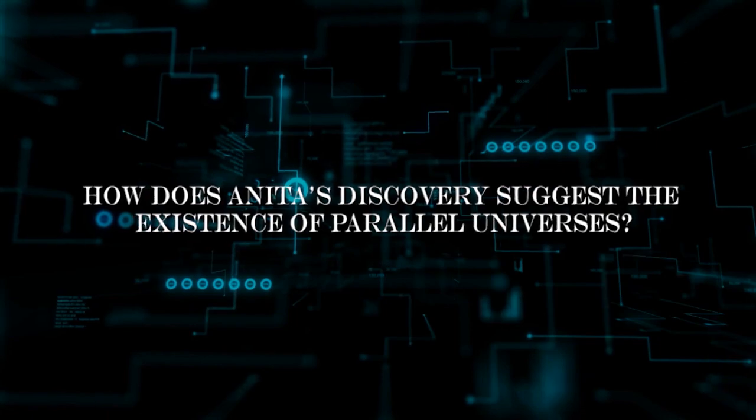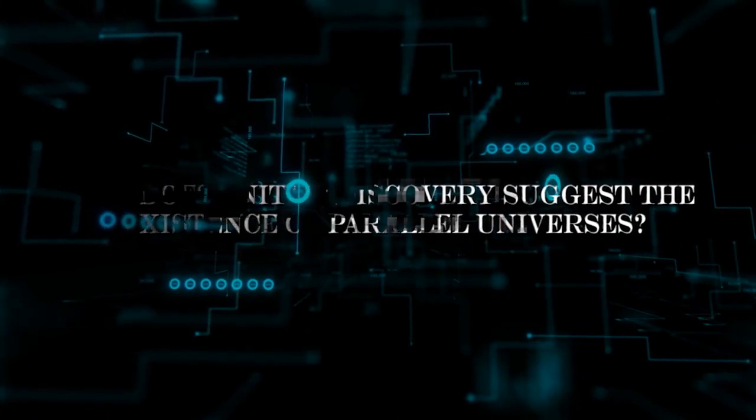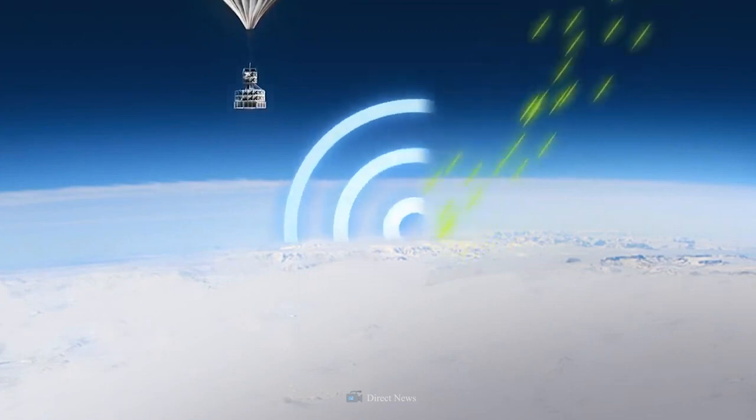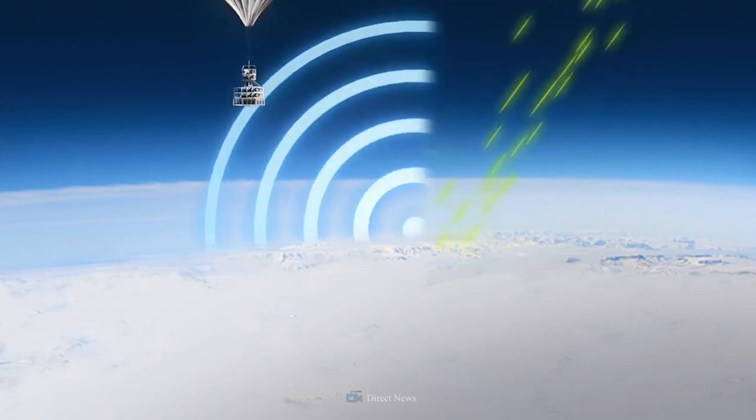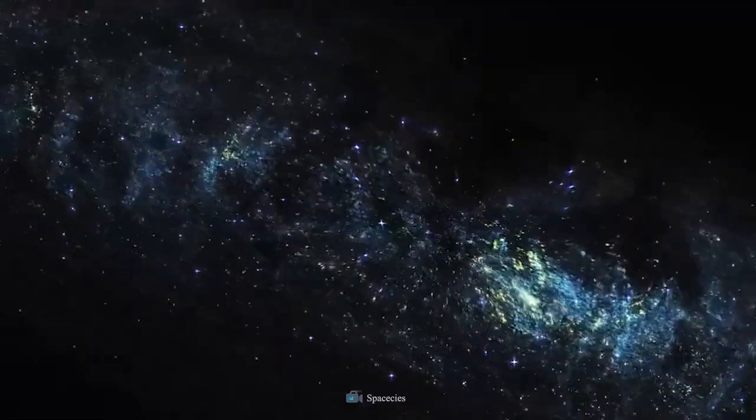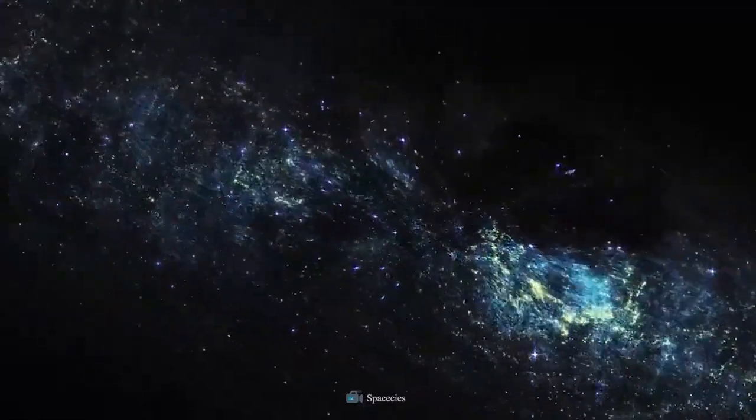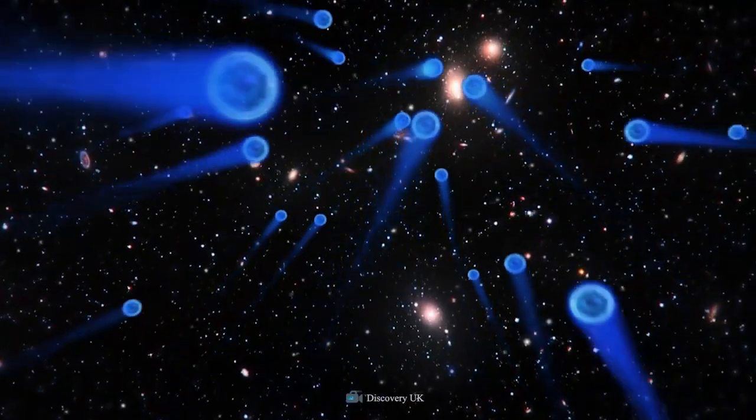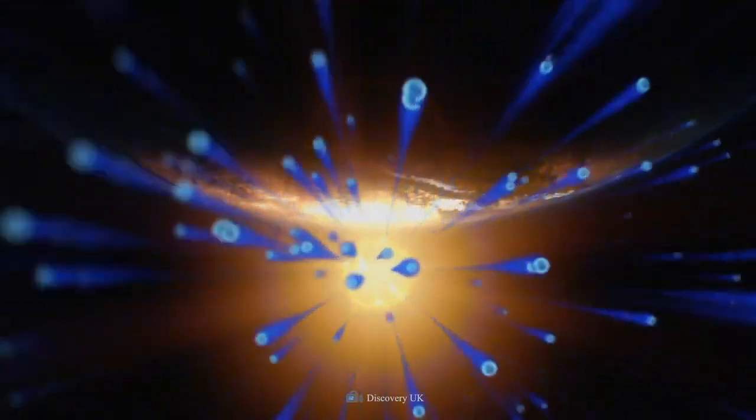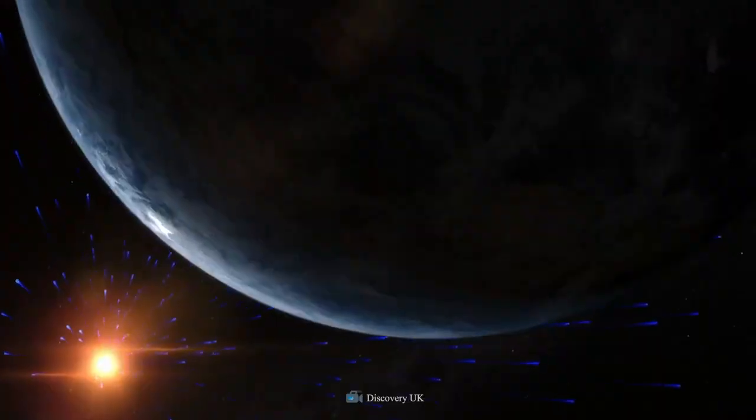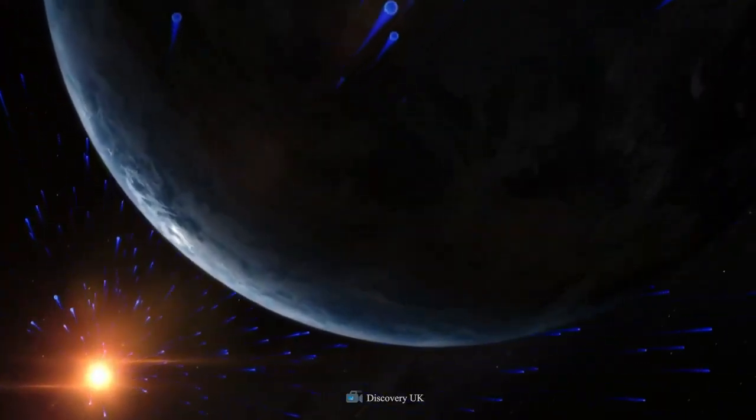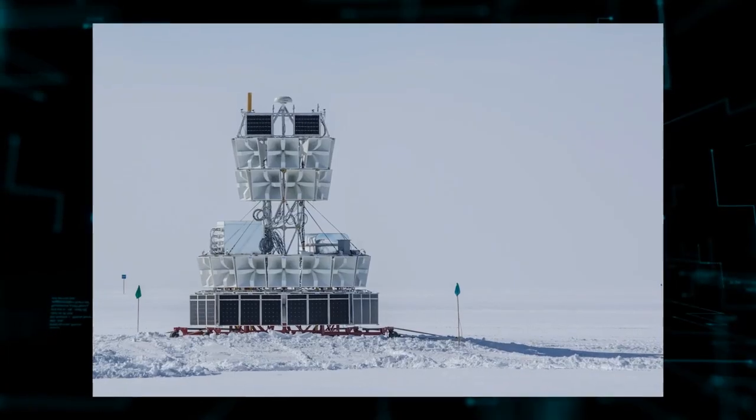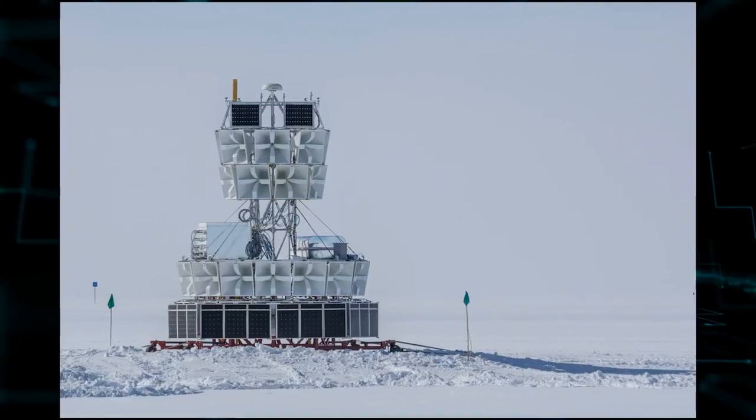How does ANITA's discovery suggest the existence of parallel universes? According to this theory, the discovery of high-energy Tau neutrinos traveling upward through the Earth indicates that there is no astronomical point source in the universe directly creating the particles seen by ANITA. Neutrinos are typically thought to be coming to Earth from beyond our solar system. But these neutrinos seemed to come from inside the Earth, and there was no obvious place where they were coming from.